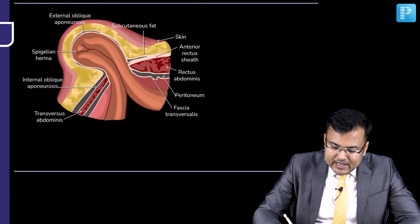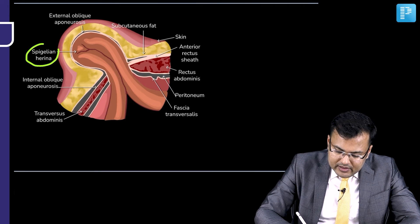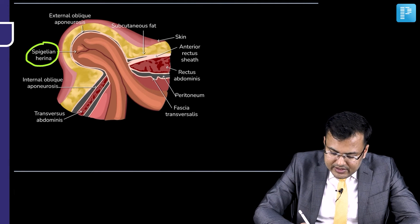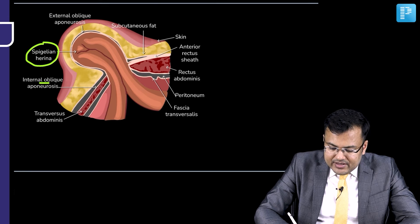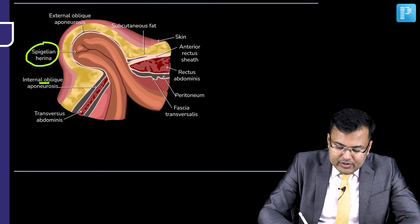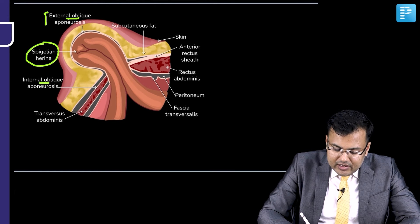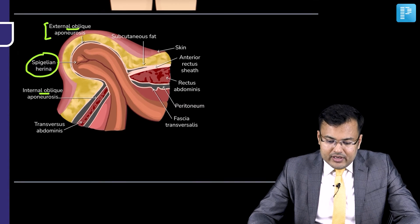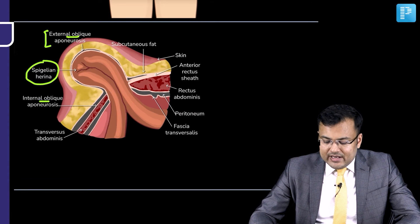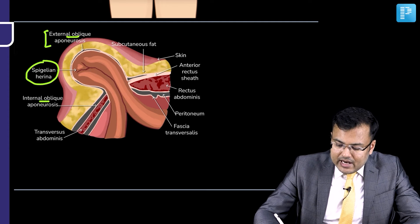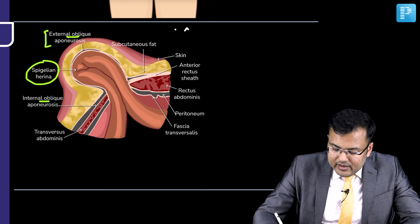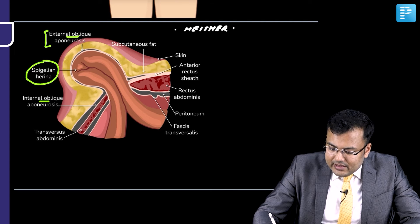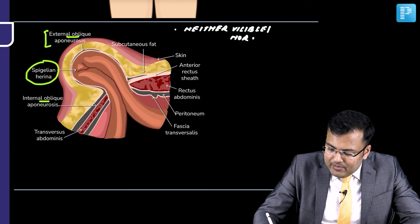In this image, you can see this is the spigelian hernia. It penetrates the internal oblique and after penetrating internal oblique, it is located between internal oblique and external oblique. So this hernia is located behind the external oblique. That is why it is neither visible nor palpable.